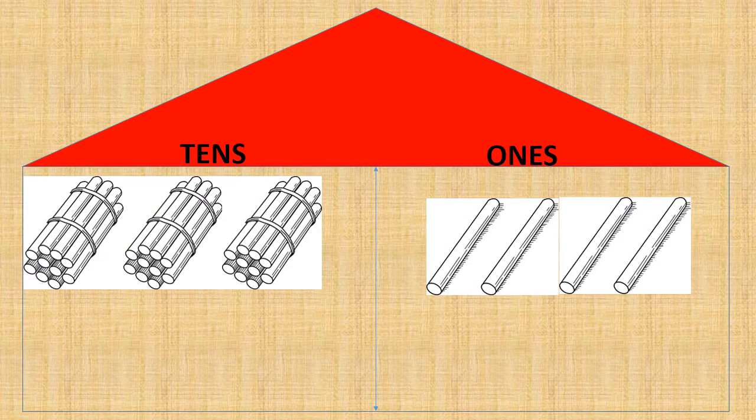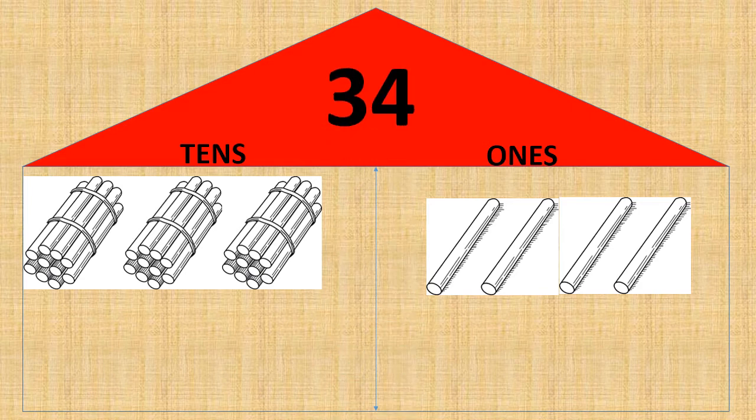In this place value house, we see three bundles of tens in tens place. That means we have three tens. And in ones place, we have one, two, three, four — four ones. Three tens and four ones gives us the number thirty-four.